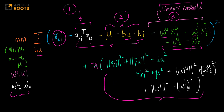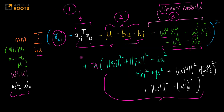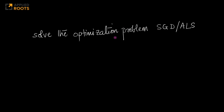You can always replace this linear model with a non-linear model as well — as long as you can differentiate it and apply techniques like SGD, you need not stick to linear models. But the simplest model here is a linear model. This whole optimization problem can be solved using stochastic gradient descent or alternating least squares, which are standard techniques used for matrix factorization.